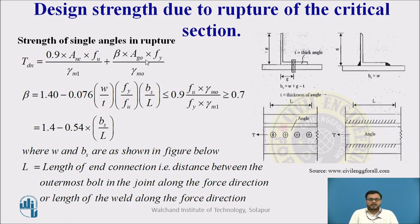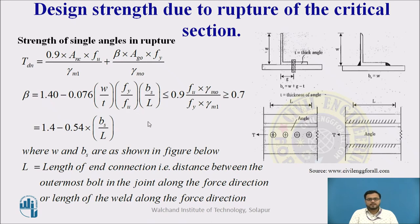Next is the design strength for the angle section. The formula is TDN = 0.9 · ANC · Fu / γM1 + β · AG0 · Fy / γM0, where ANC is the net area of the connected leg, AG0 is the gross area of the outstanding leg, Fu is the ultimate strength, and γM1 is the partial safety factor. β is the correction factor. W is the outstanding length, T is the thickness, Fy is the yield strength, and Fu is the ultimate strength. For a bolted connection, BS = W + gauge − thickness; for a welded connection, BS = W. L is the length of the connection.